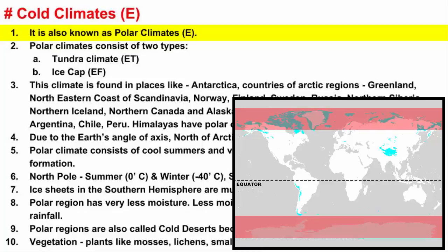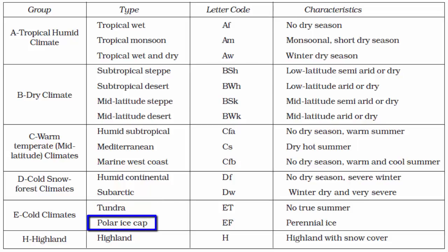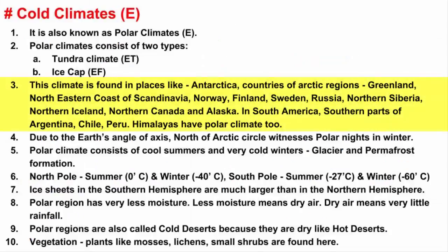Polar Climates exist poleward beyond 70 degrees latitude and consist of two types: Tundra Climate, denoted by ET, and Ice Cap Climate, denoted by EF.